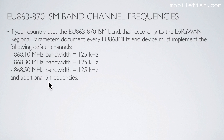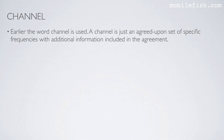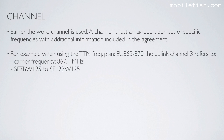In addition, there are 5 more frequencies that can be freely attributed by the network operator. For example, the Things Network implemented the following frequencies: 867.1, 867.3, 867.5, 867.7, and 867.9 MHz. A channel is just an agreed-upon set of specific frequencies with additional information included in the agreement. For example, when using the Things Network frequency plan EU863-870, uplink channel 3 refers to carrier frequency 867.1 MHz, spreading factor 7 to 12, all using the 125 KHz bandwidth.